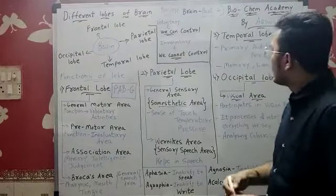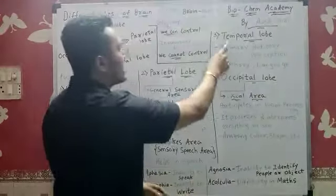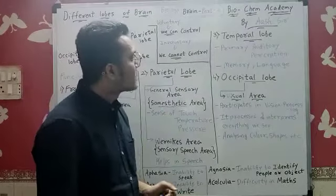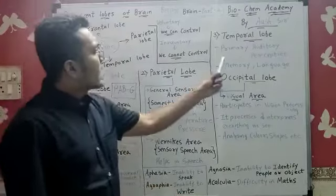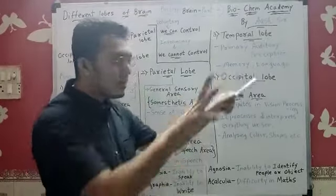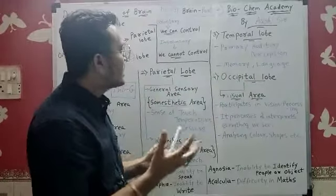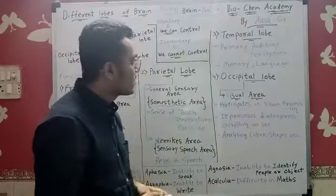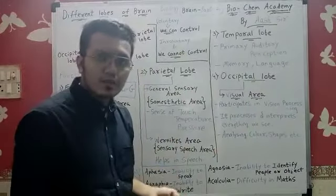The next lobe is temporal lobe. That was temporal lobe. What function is it? Primary auditory perception. Receiving sound, memory, and language. Okay. We can learn different types of language.